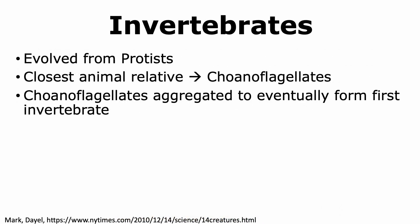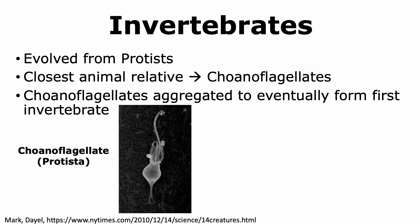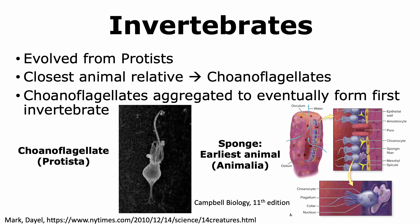Scientists have determined that invertebrates evolved from protists. Coanoflagellates are considered to be the closest relatives to animals, including invertebrates. It is thought that coanoflagellates, which are unicellular protists, aggregated together to eventually form the first invertebrate. Sponges, which are considered to be one of the earliest animals that evolved, show the presence of specialized cells called coanocytes that are very similar to coanoflagellates.